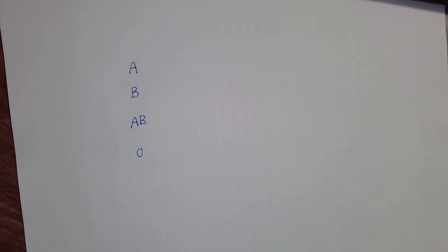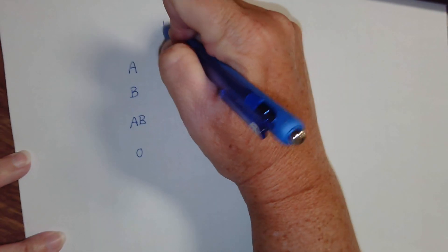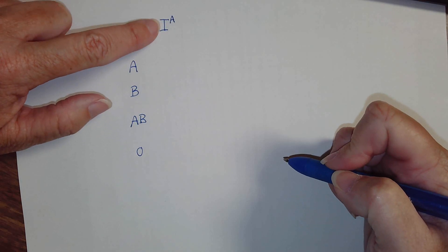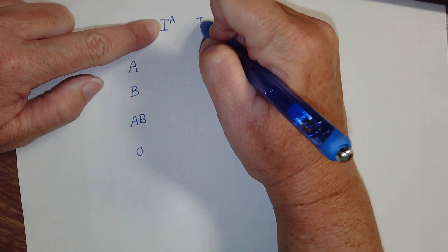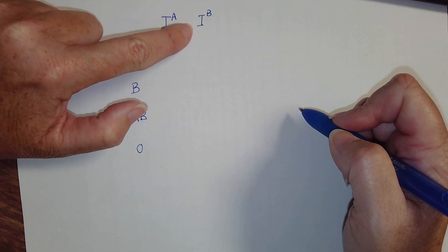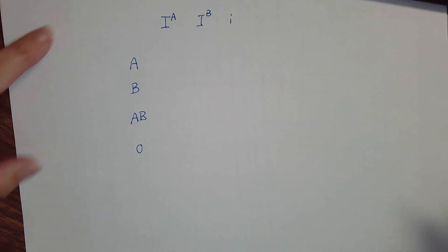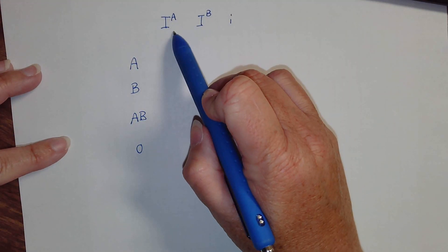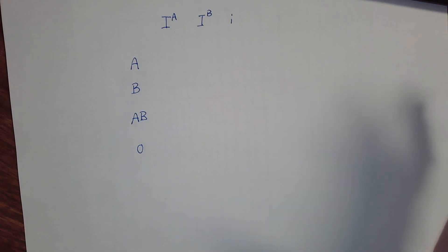There's also positive and negative, but we're only going to worry about blood type here. Type A is represented by a capital I, which tells you it's dominant. Type B also has a capital I, so it is also dominant. Little i is the recessive form and represents Type O. Type O blood is recessive to both A and B.